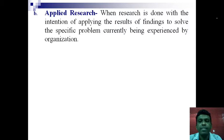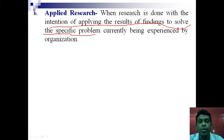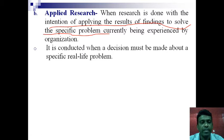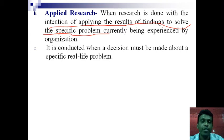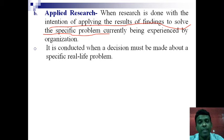Applied research, on the other hand, has a particular problem at hand. When research is done with the intention of applying the results or findings to solve a particular current problem in your organization, it is known as applied research. It is generally conducted when a decision must be made about a specific real-time problem. For example, if a production department faces excessive rejection of finished goods and you research why there are so many quality control rejections, that is applied research, because you are going to apply the findings in your organization.